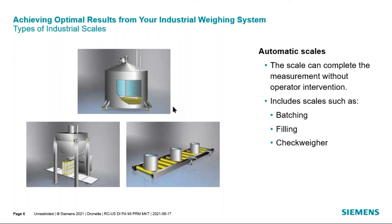With a gain-in-weight system, the mixer bin is placed on load cells and it monitors as each component is added, stopping the material transfer when the desired set point is reached. Filling machines fill containers — bags or bottles of material. A scale is installed underneath the filling station with controls built in to transfer the container onto the scale, start the material flow, stop it when the set point is reached, and then index to the next container.